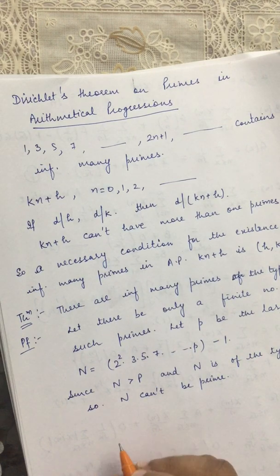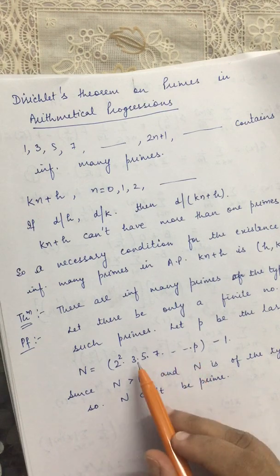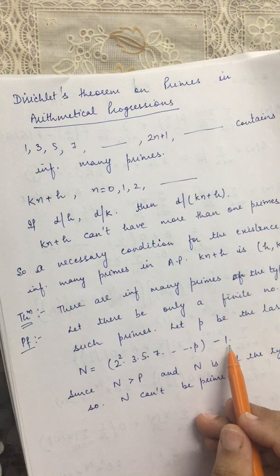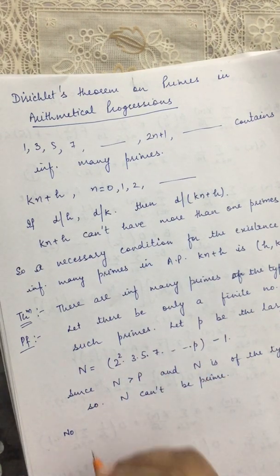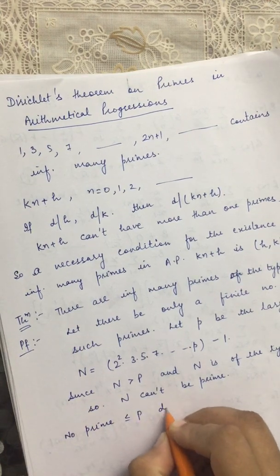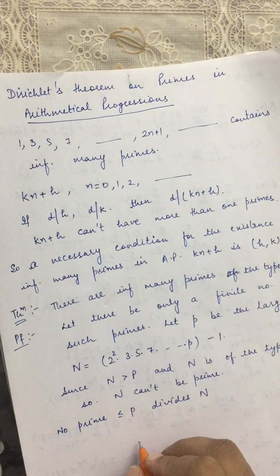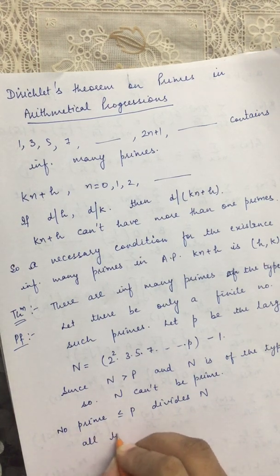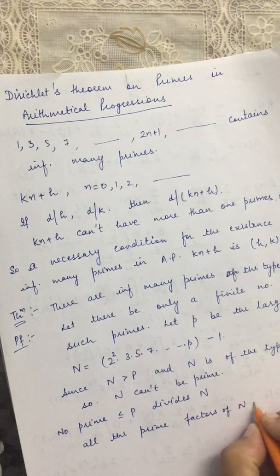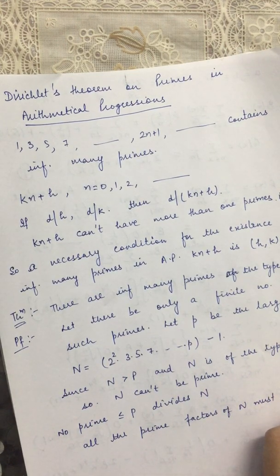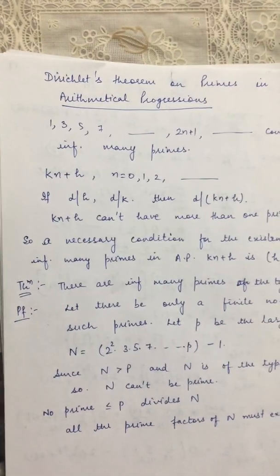Second, no prime less than or equal to P divides N. This means no prime among 3, 5, 7, …, P can divide N, because if any such prime divided N it would also divide the product factor and would then have to divide 1, which is impossible. So all the prime factors of N must exceed P.